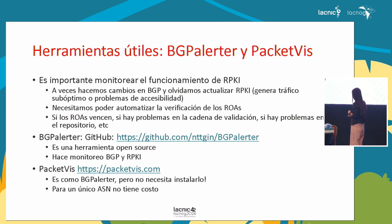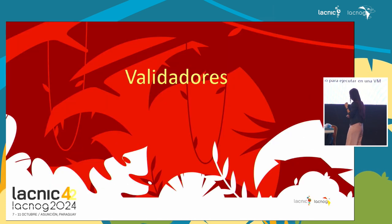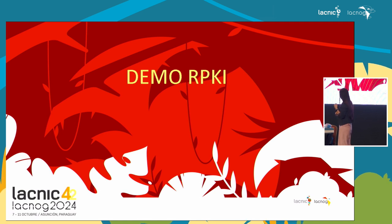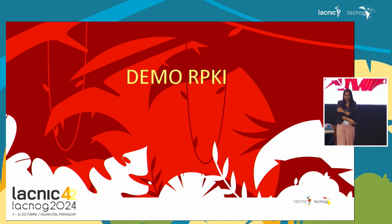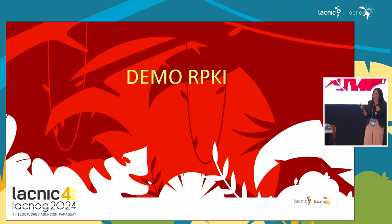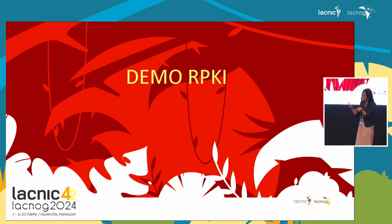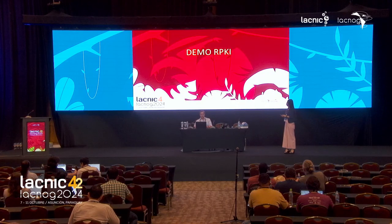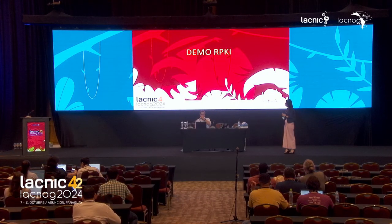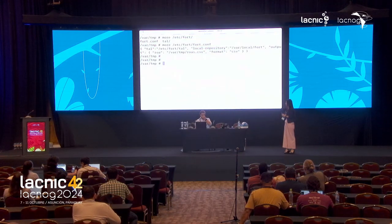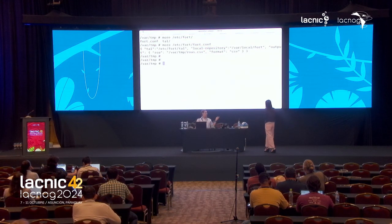Before going to the tools, let's go to the demo. To see the RPKI part, let me show you how these ROAs can be viewed. We're going to use the Fort validator to show you some of the important files. Can we have the presentation on the screen for the demo? We're going to show you how the Fort validator works and what it looks like when you download it.